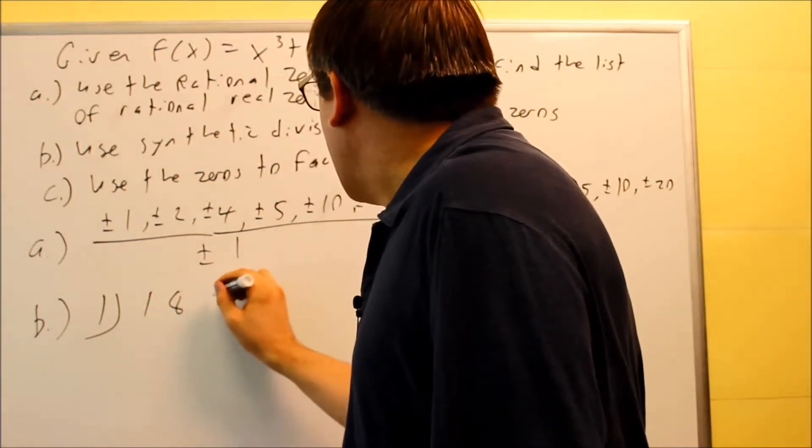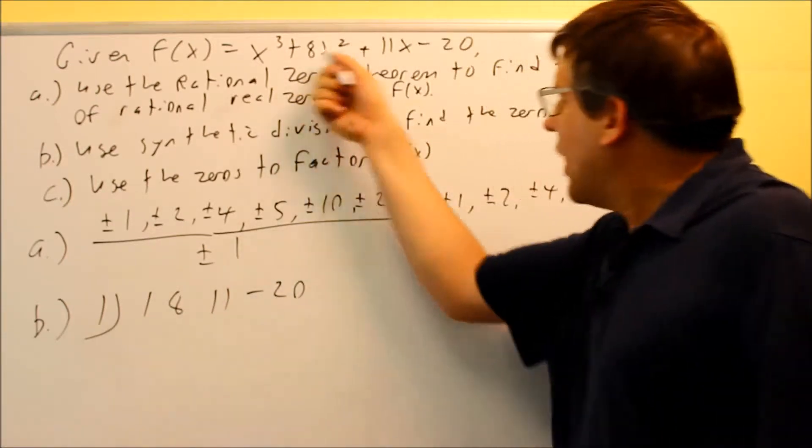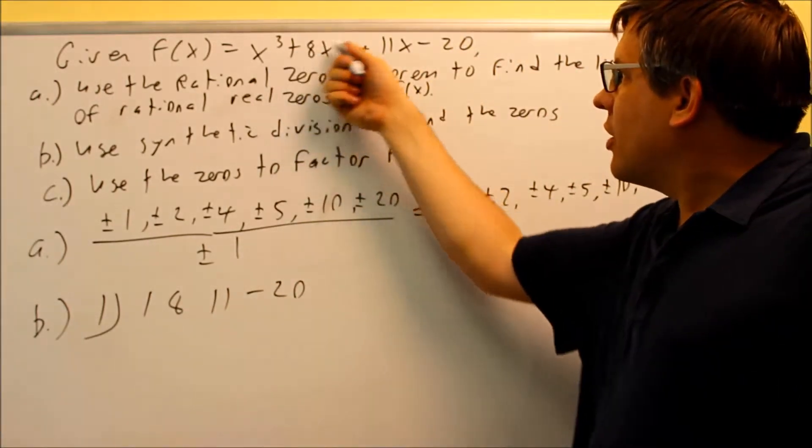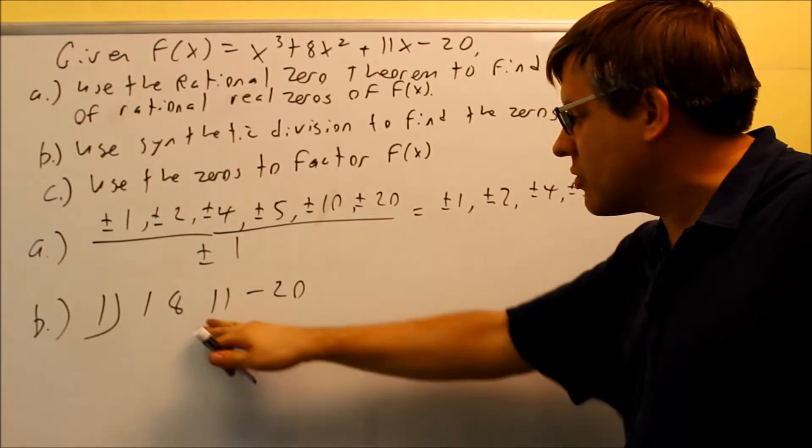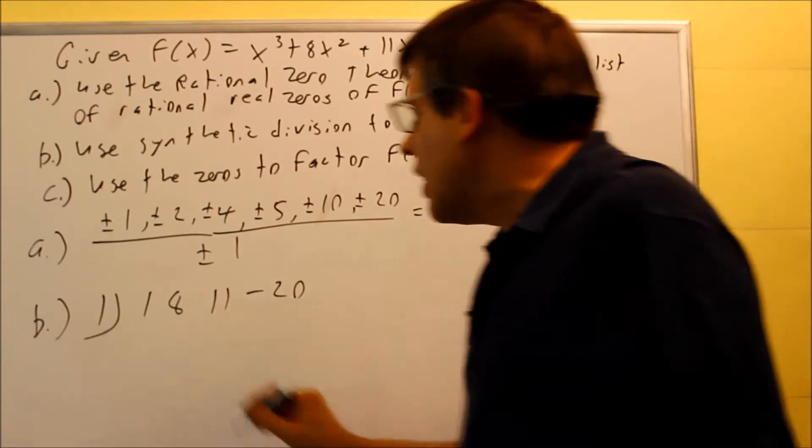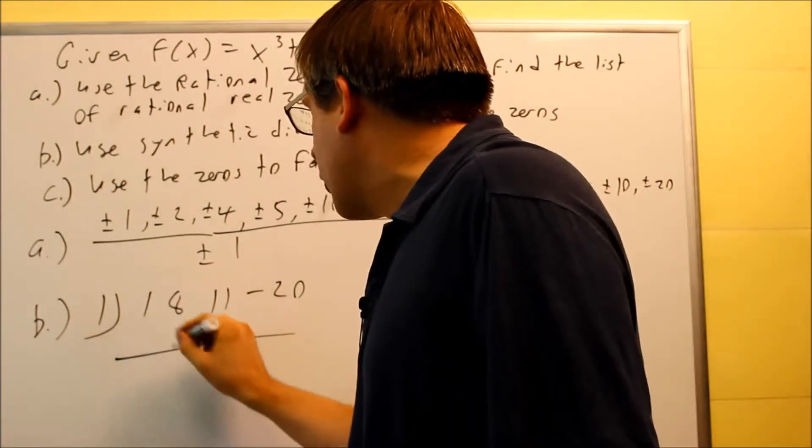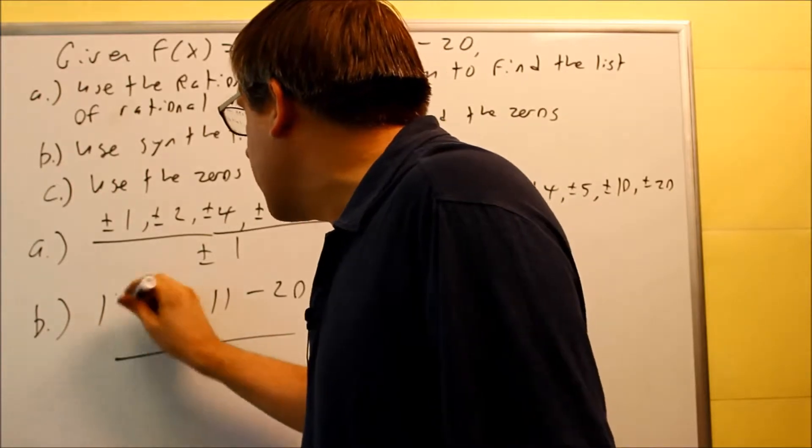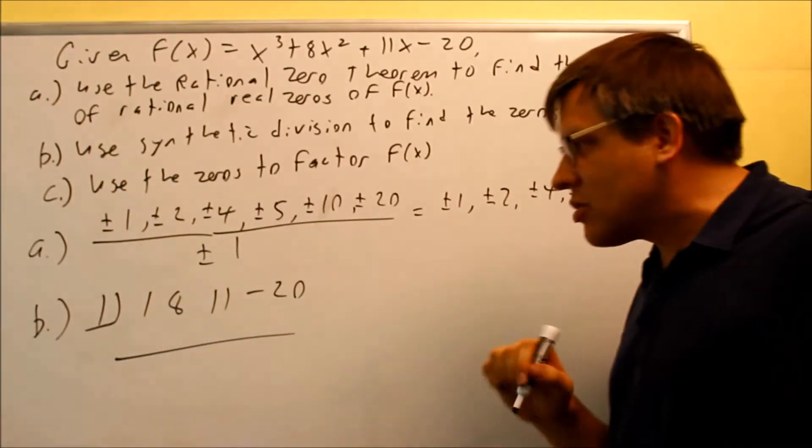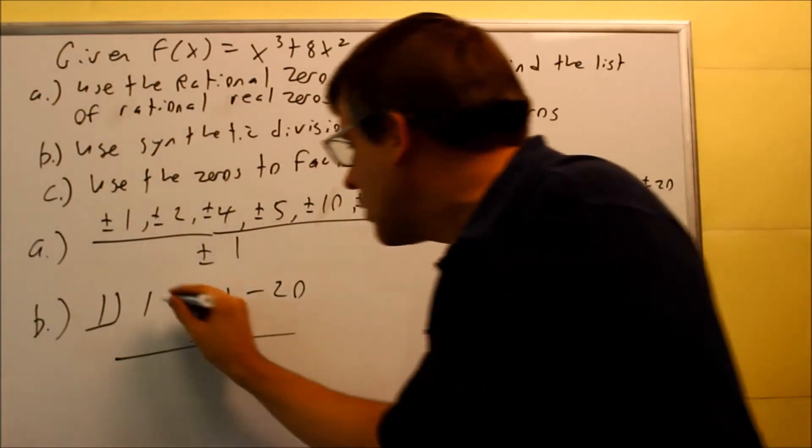I have my coefficients that I have from this. I don't have to modify this at all. It's already descending powers and no term is missing so this is okay to leave as is. And then I will go through synthetic division. So the one right here that's in my original box, that's the one I'm testing first.